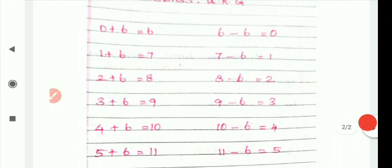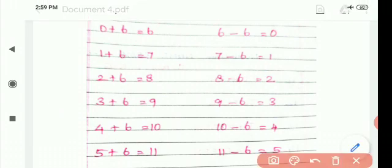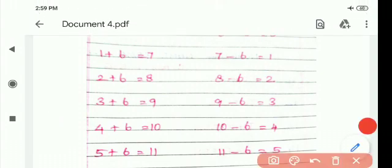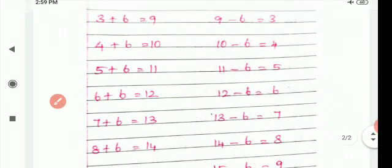Like that, we subtract one number. For example, 6 minus 0. 6 minus 6 is 0. 7 minus 6 is 1. 6 after 7. So answer is 6. 6 after 7 is 8, so 2. Answer is 2. Like this you can subtract these numbers.